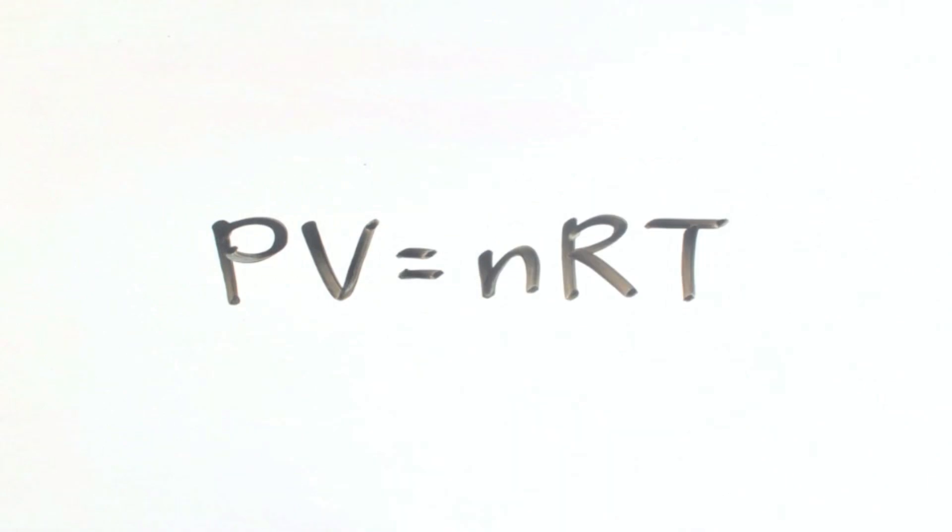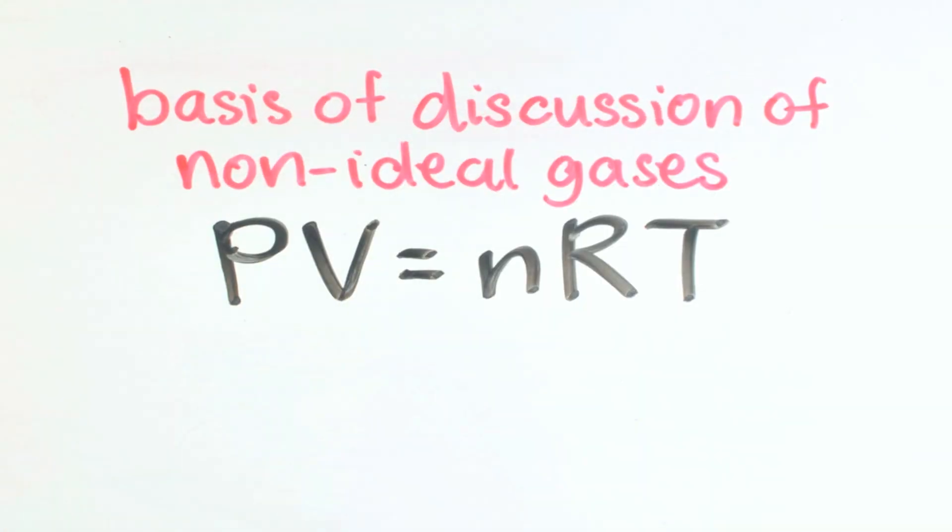You will not want an exothermic reaction to get out of control. What about PV equals to nRT? That's the ideal gas law. It's the basis of discussion of non-ideal gases in the real world.